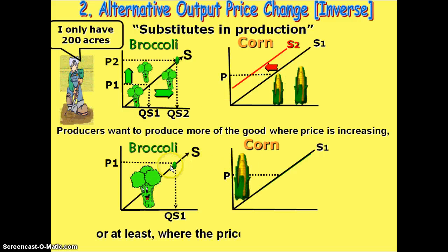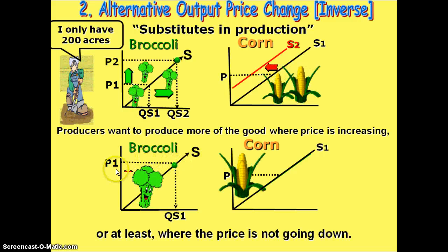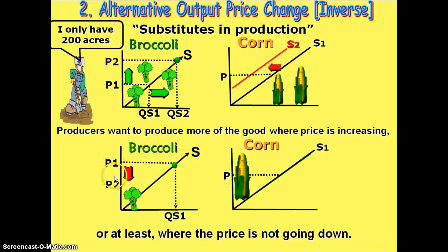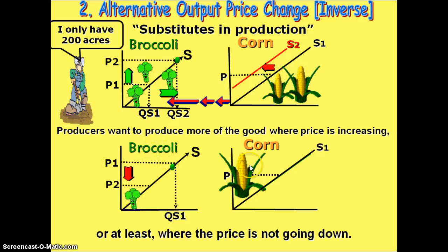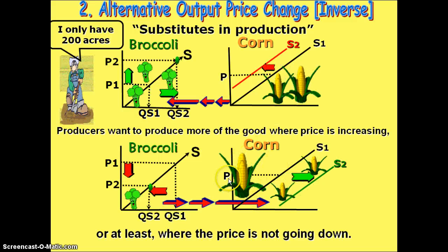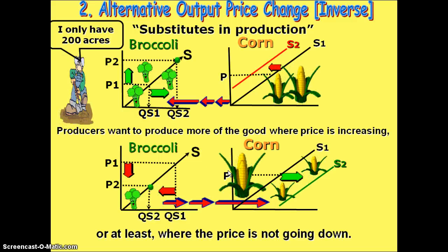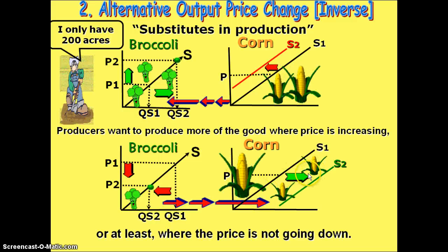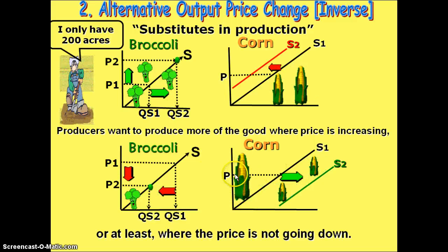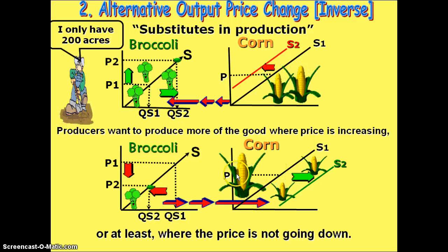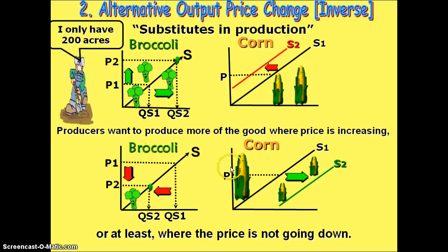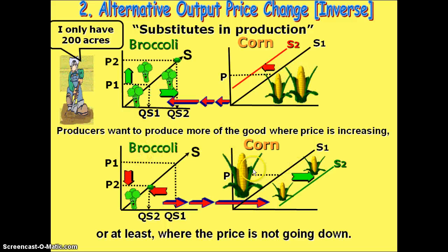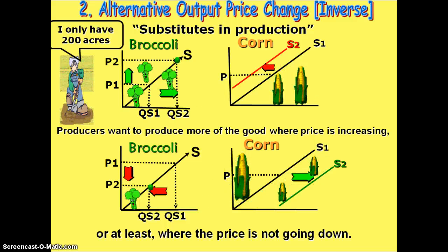On the opposite side, if broccoli moves from P1 to P2 and broccoli is decreasing in price, I'm going to increase the amount of corn I'm producing as a farmer, even though the price for corn has remained the same. That's what we have to keep in mind when we talk about shifters — we're not changing the price, we're changing how much we are producing based on something other than the price people pay in the market. Since broccoli's price went down, I'm going to produce more corn even though the price of corn has remained constant.